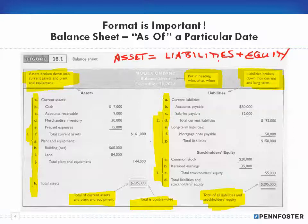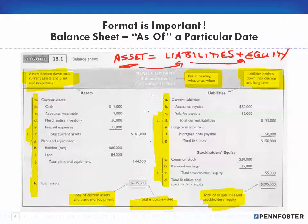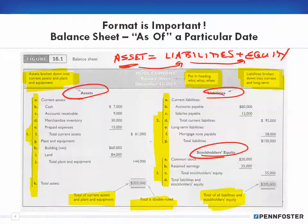When a business dissolves, they liquidate all their assets — turn them into cash — and use that cash to pay off liabilities. Any money left over goes to equity, meaning the owner or shareholders like common or preferred stockholders. If there's no money left after paying off liabilities, the company is insolvent. On the balance sheet, assets are on one side and liabilities and equity are on the other, with totals that must match.